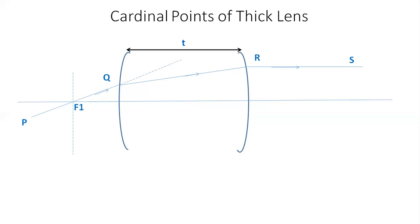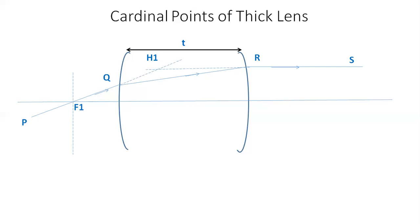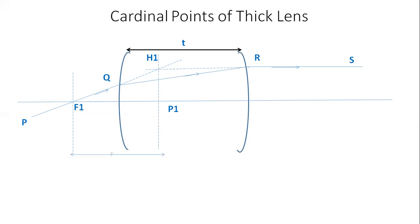Extrapolate the incident light in the forward direction and the emergent light in the backward direction. They meet at the point H1. At point H1, draw a normal perpendicular to the principal axis — a plane passing through H1 and perpendicular to the principal axis. That plane cuts the principal axis at the point E1, which is the first principal point of the thick lens.